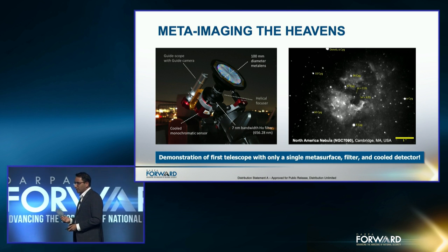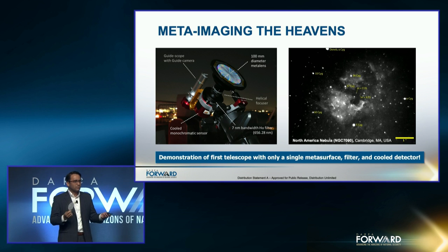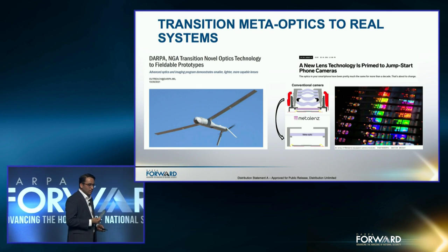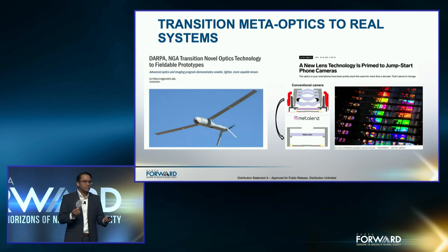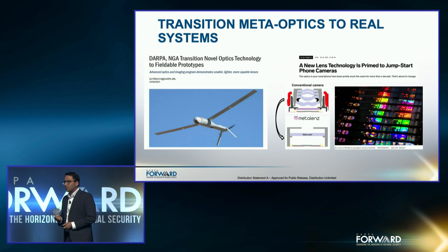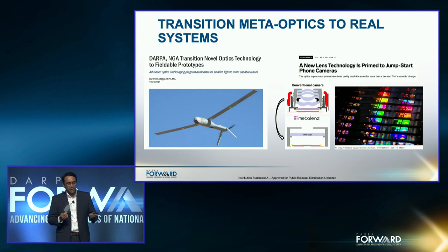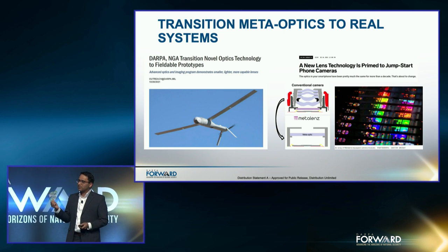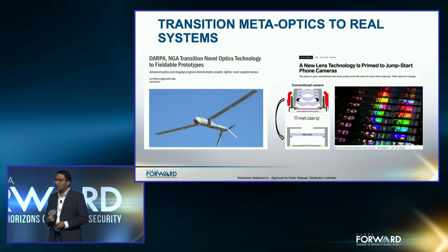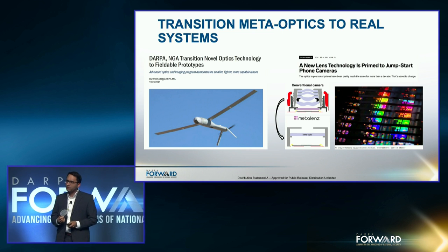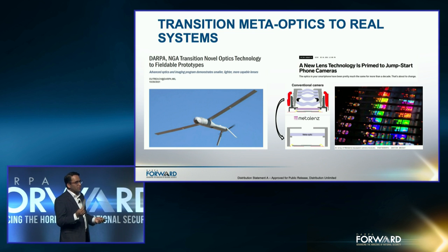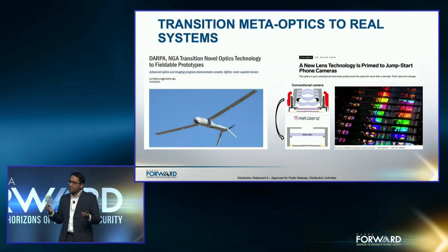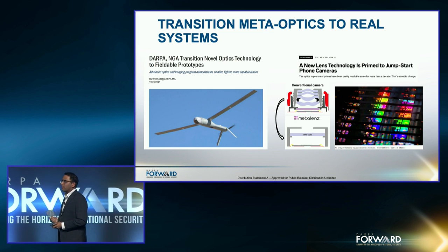This idea has had significant implications, and much of this has now transitioned out of DARPA. The idea of using a meta-optic — not just as an optical element, but also as an aberration corrector for reducing distortions — allows a meta-surface to reduce the number of elements required. With the help of the National Geospatial Intelligence Agency and the Air Force Research Labs, we've transitioned these novel optic prototypes to fieldable prototypes for use on unmanned aerial systems, demonstrating an order of magnitude reduction in size and weight, or for the same size and weight, about a 4x enhancement in resolution.